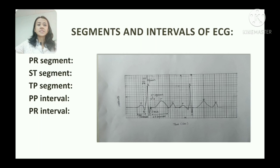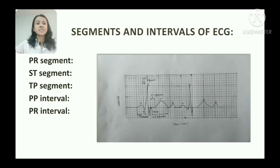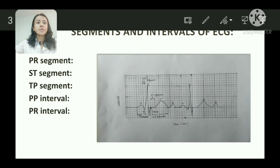Next is the PP interval, which is the interval between two P waves. Then there is the PR interval, which extends from the onset of the P wave to the onset of the QRS complex — actually between the P wave and the Q wave. Since the Q wave is often absent, it is known as the PR interval, as shown in this diagram.